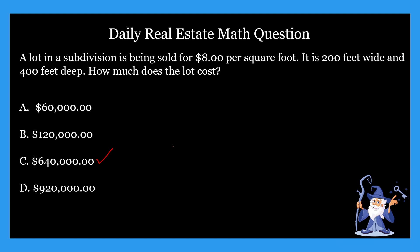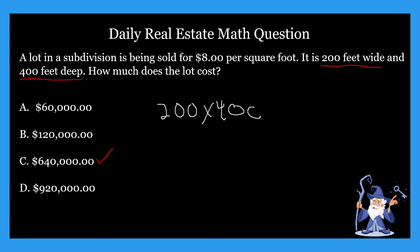So how did we get that? We're doing two steps in these problems. The first step is to find the total square footage. We look at 200 feet wide and 400 feet deep, and we multiply them together. So we take 200 multiplied by 400, which gives us 80,000 square feet.